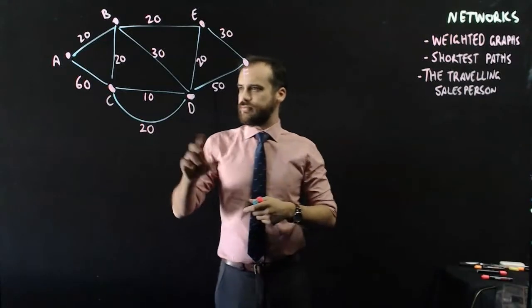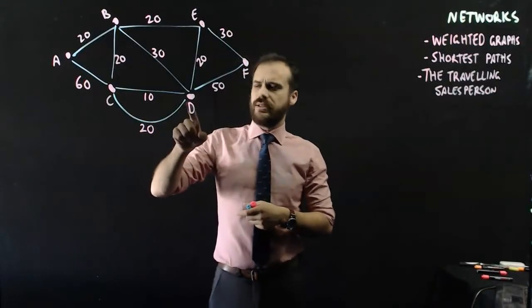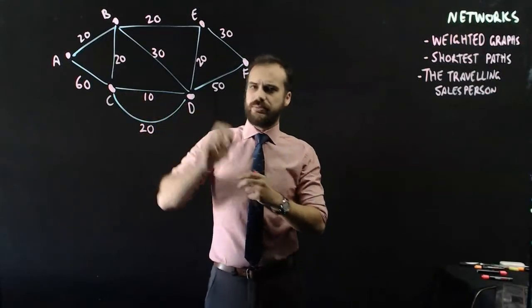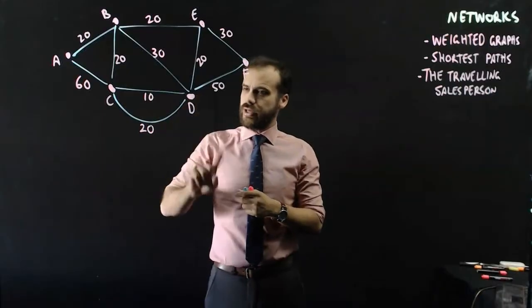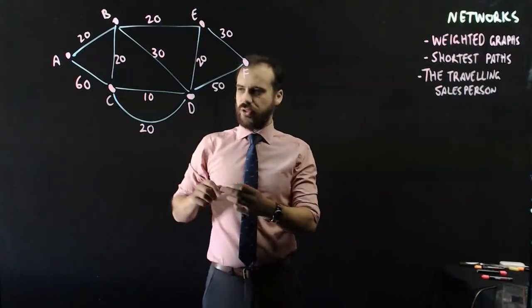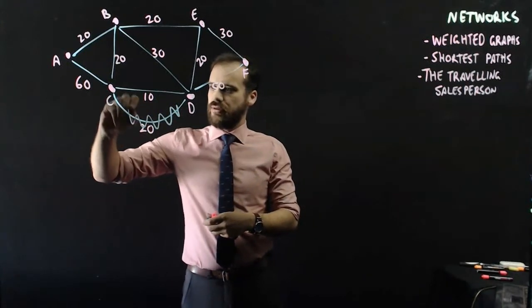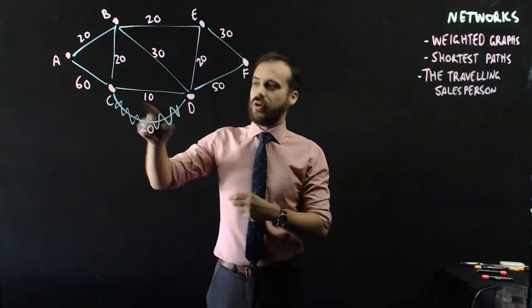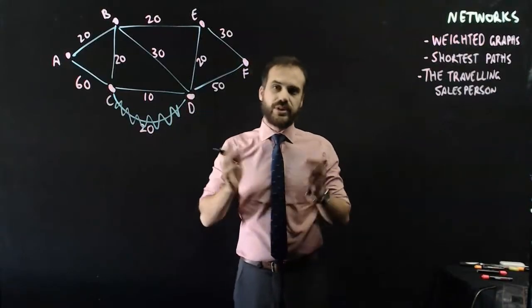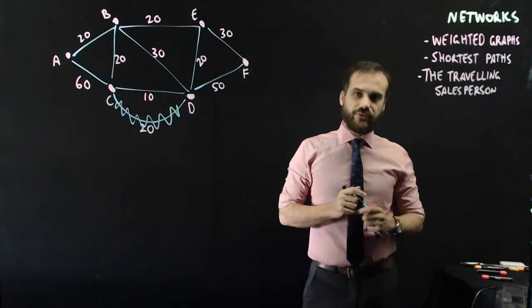But there are some obvious things that we can do. For instance, from C to D, if I was moving from point C to point D, there's no way that I'm ever going to travel along this road here. This road is useless because why would I take a 20 kilometre road when I could take a 10 kilometre road? So, that's pretty easy so far.